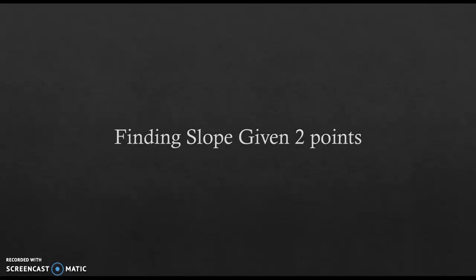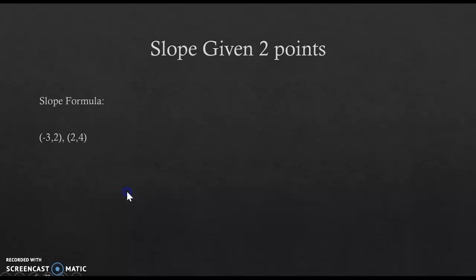The slope formula is y2 minus y1 over x2 minus x1. Now the twos and ones just indicate the point they came from. So really all you have to keep in mind is that notice that our twos came first, so we have to choose from the same point for our x and our y. This truly is just the difference, which means subtraction of y's over the difference of x's.